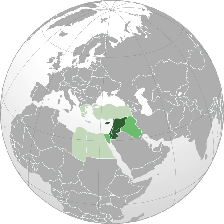The term Levant, which appeared in English in 1497, originally meant the east in general or Mediterranean lands east of Italy. It is borrowed from the French Levant, referring to the rising of the sun in the east, or the point where the sun rises. The phrase is ultimately from the Latin word levare, meaning 'lift' or 'raise.'